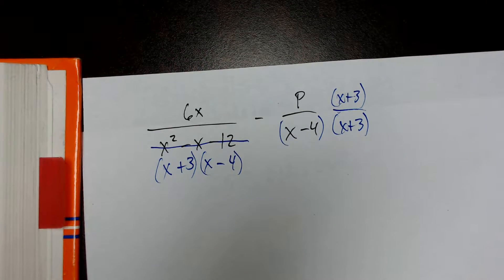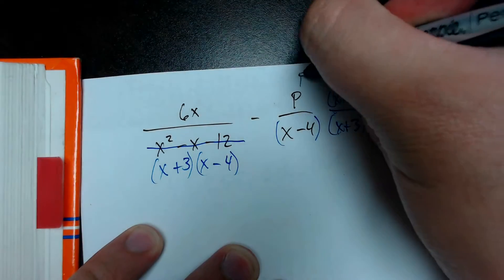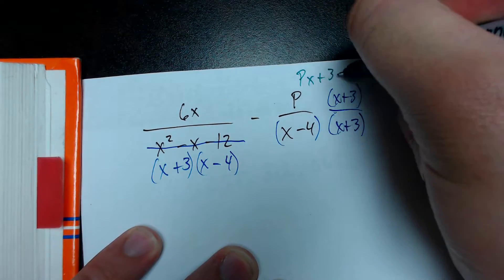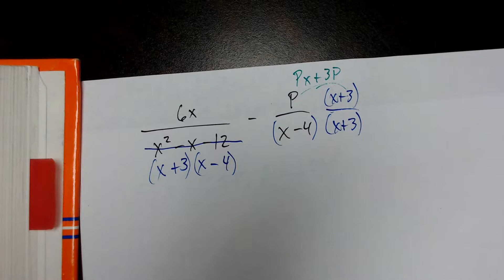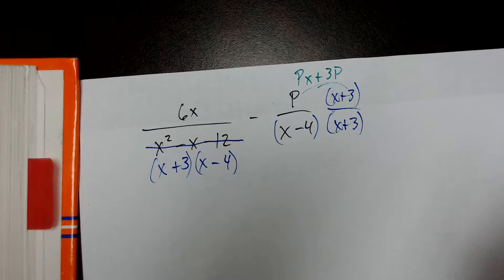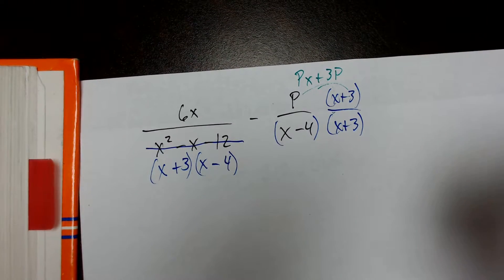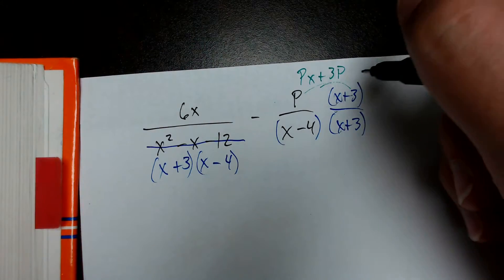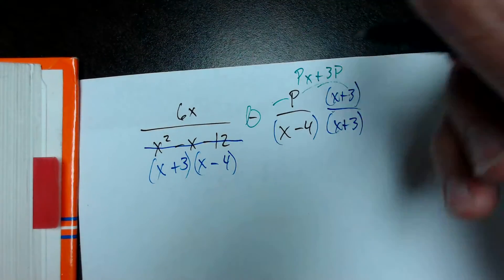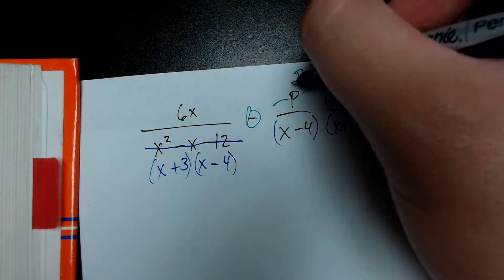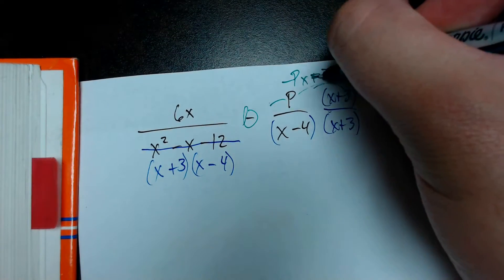The numerator over here is going to become px plus 3p, through distributive property. And actually, did they distribute it? Yes, they did. And then, oh, whoops, I'm sorry. This is a negative p. All right, so negative p times negative 3, that would be negative, and that would also be a negative.